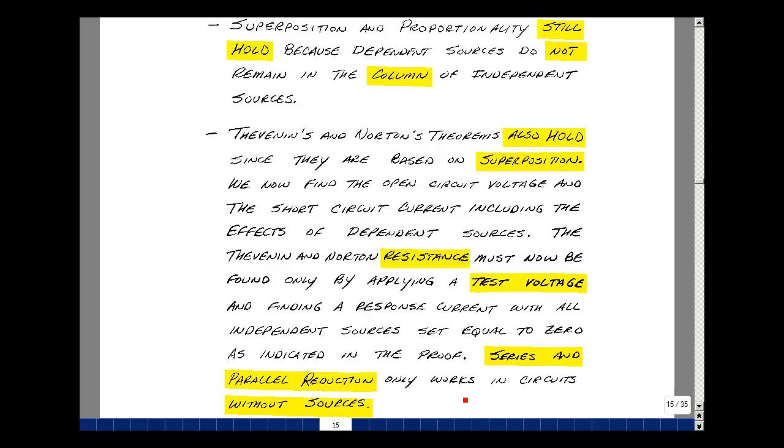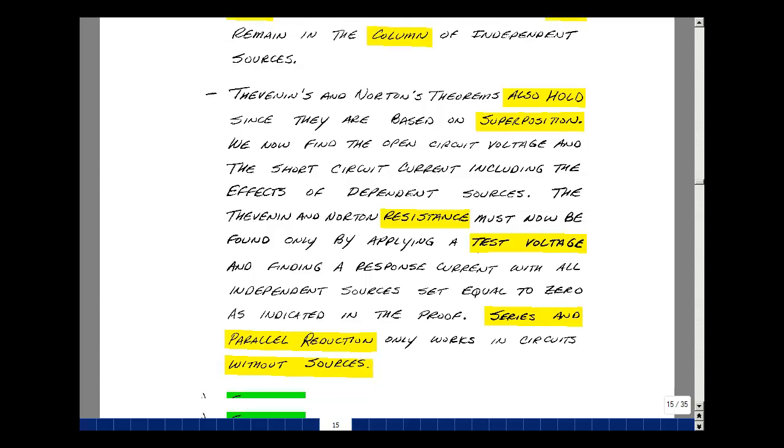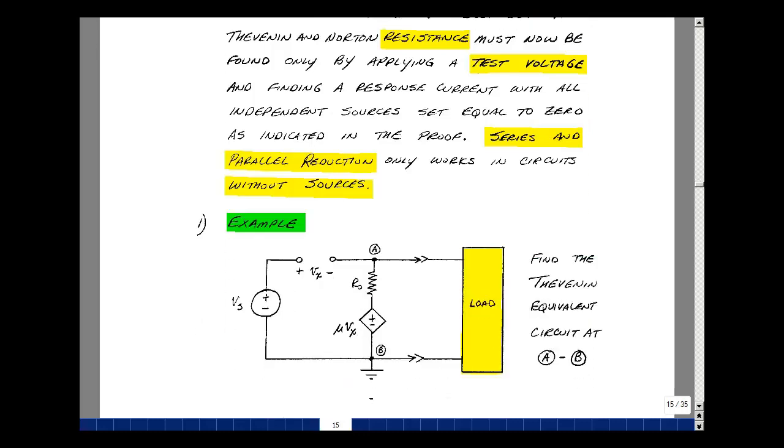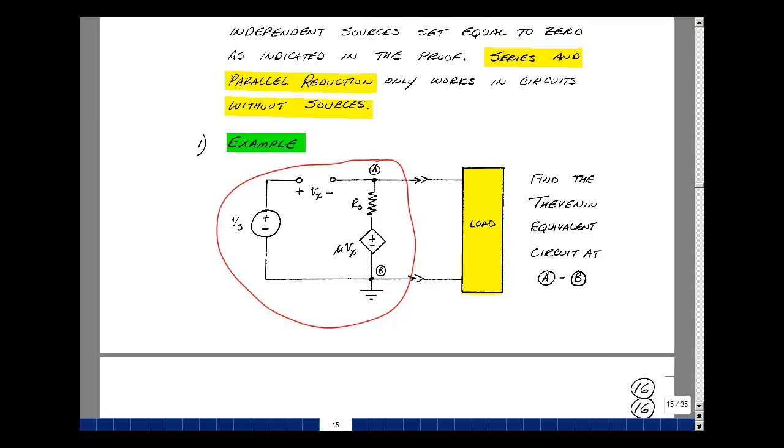Series and parallel reduction techniques only work if we have no sources. Let's take a look at an example. Let's find the Thevenin equivalent circuit for this combination of an independent source, a resistance, and a dependent source. Let's remove the load and find the open circuit voltage.